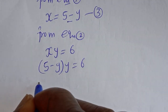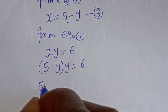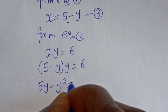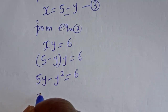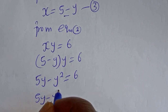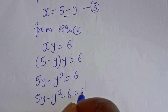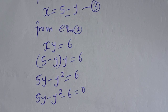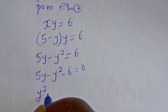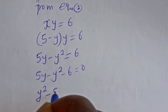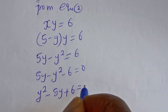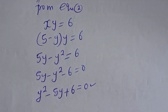Let's open the bracket: 5Y minus Y squared is equal to 6. Rearranging, 5Y minus Y squared minus 6 is equal to 0. We can rearrange this further: Y squared minus 5Y plus 6 is equal to 0. So this is a quadratic equation.